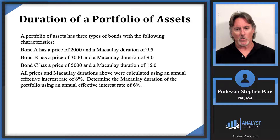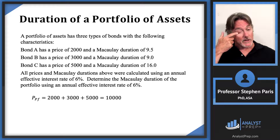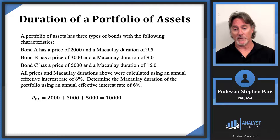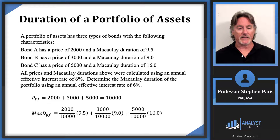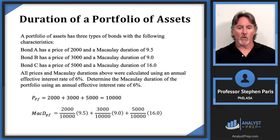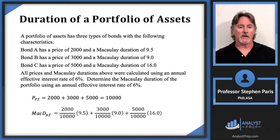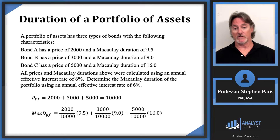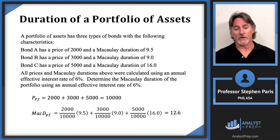Applying this to our problem: the total portfolio price is 2,000 + 3,000 + 5,000 = 10,000. The Macaulay duration of the portfolio is a weighted average of 9.5, 9, and 16. The weight for bond A is 2,000/10,000, for bond B is 3,000/10,000, and for bond C is 5,000/10,000. Working through the arithmetic gives a Macaulay duration of 12.6.